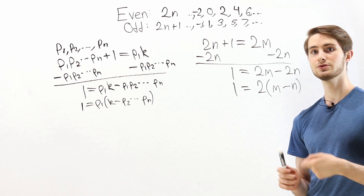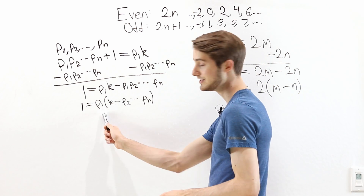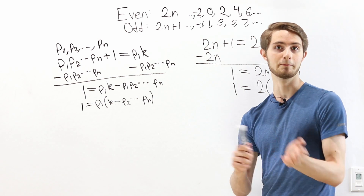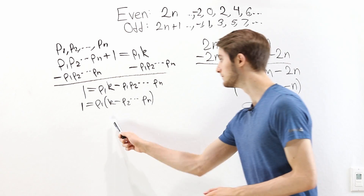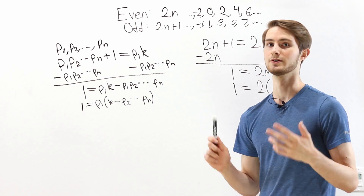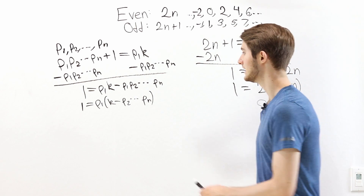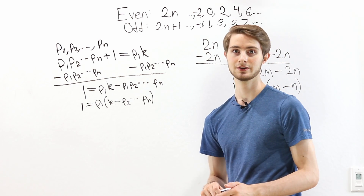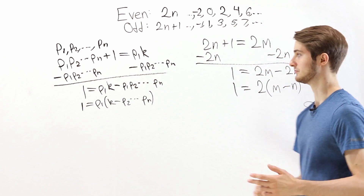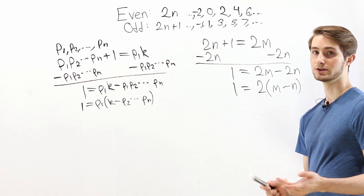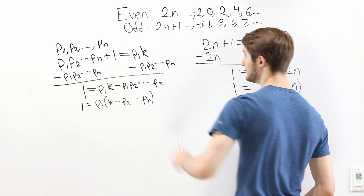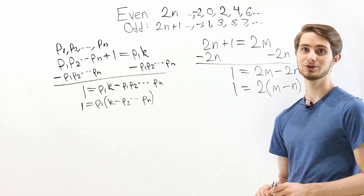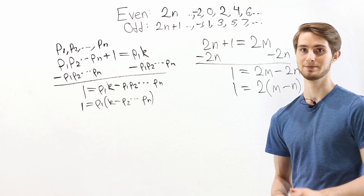Notice this equation is very similar to the one in the odd-and-even proof, and we're going to use the same argument. 1 is not a multiple of p1 because all prime numbers are bigger than 1, so all of their multiples are also bigger than 1. That means this equation is not possible — we've reached a contradiction. Our assumption must have been false, and the only thing we assumed is that there are finitely many prime numbers. Which means that assumption was not correct, and we conclude there are infinitely many prime numbers.